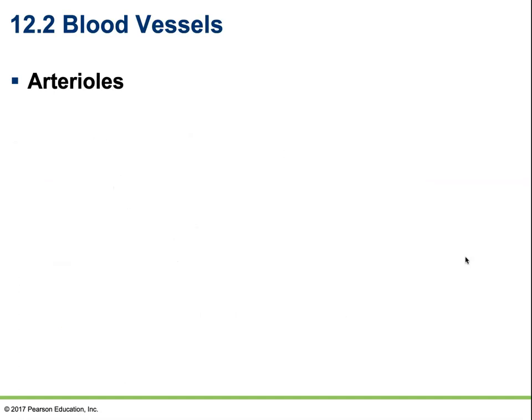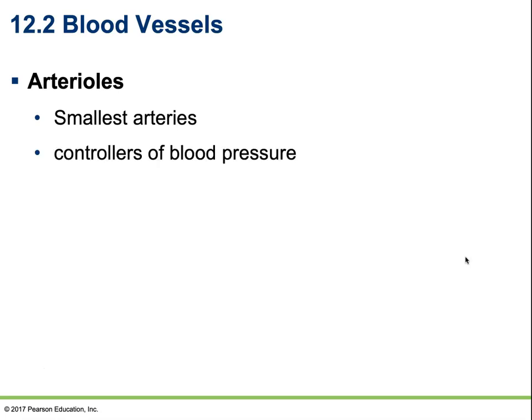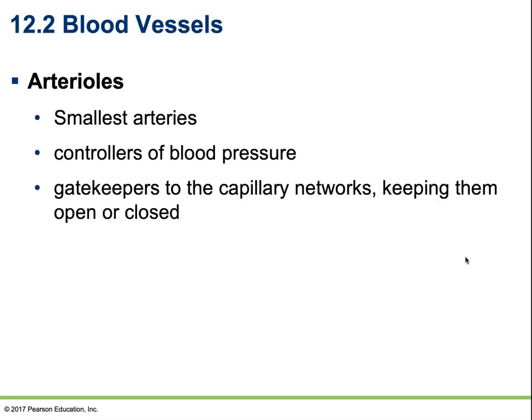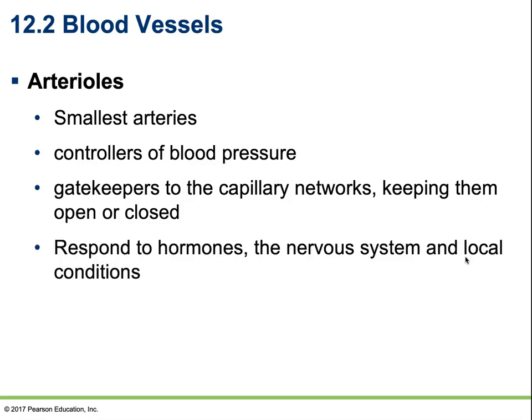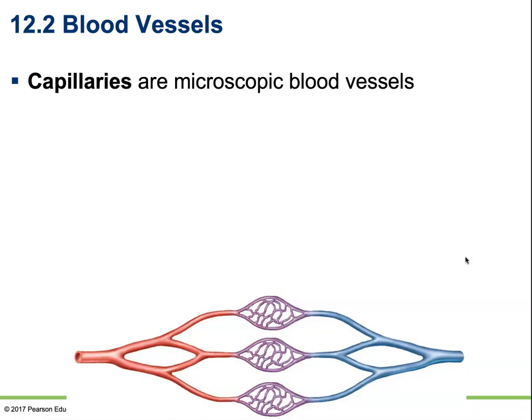Arterioles are our next stop — they are the very smallest arteries and help control blood pressure as well. They're the gatekeepers to the capillary networks, either keeping them open or closed to allow blood flow through those capillaries as needed. They respond to hormones, the nervous system, and local conditions to determine whether they need to be opened or closed.